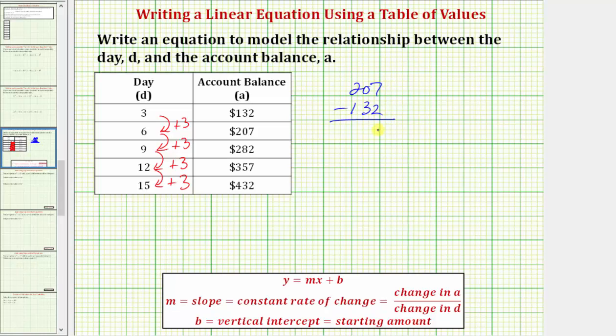Seven minus two is five. Here we perform an exchange. We'd exchange one hundred for ten tens. Ten minus three equals seven. One minus one is zero.